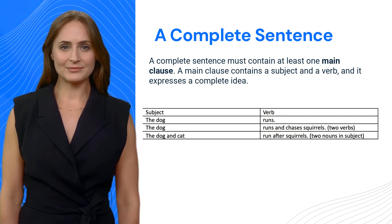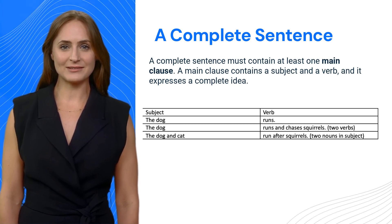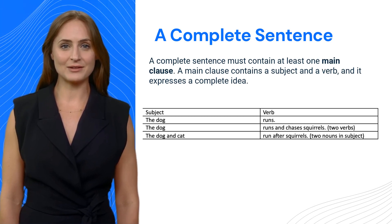Subject, verb: The dog runs. The dog runs and chases squirrels — two verbs. The dog and cat run after squirrels — two nouns in the subject.